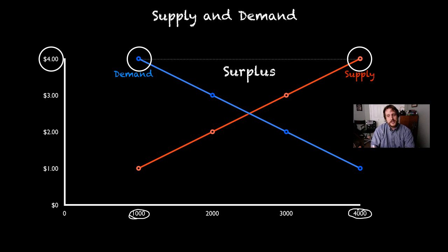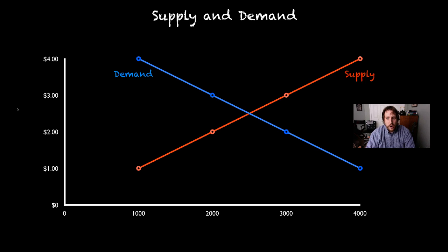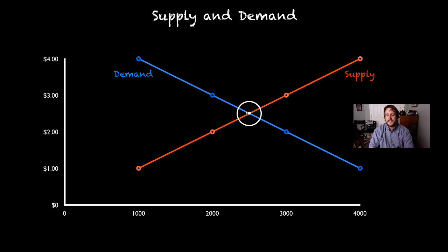We ended up with about three thousand pounds too many. To get rid of those extra Brussels sprouts, stores are going to want to decrease the price. So over time, through stores raising and lowering their prices, hopefully you end up at this point right here — where the supply and demand lines intersect.